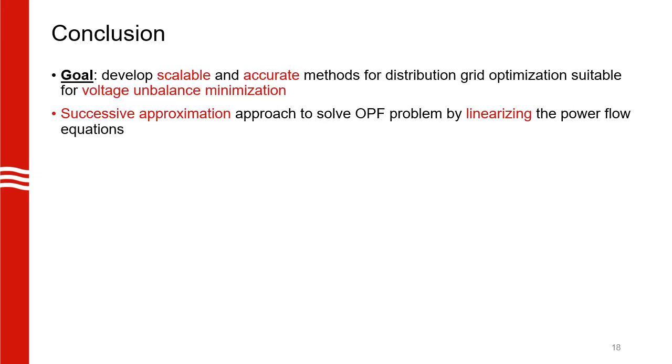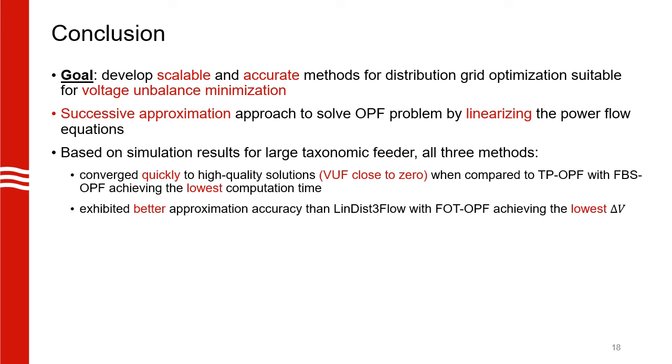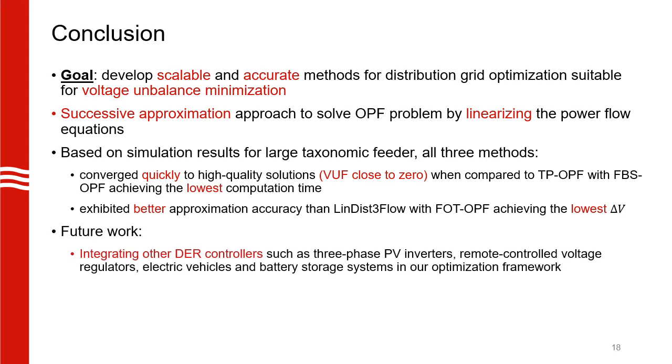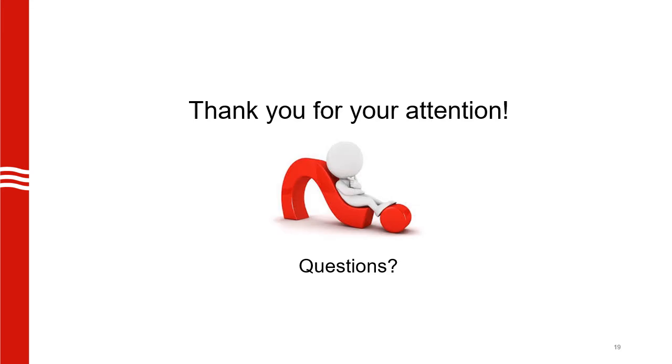Finally, to conclude, the main goal of our work was to develop scalable linear approximations for optimization of distribution grids that we can accurately use to analyze voltage unbalance. We used a successive approximation approach to converge to AC feasible solutions. Based on our simulation results, we saw that all three methods converge to very good solutions with considerable improvement in computation time. We also observed that the approximate solutions after the first iteration for all three methods had better accuracy than Lindisflow. In terms of future work, we plan to integrate more control variables into our OPF framework. This could either be electrical vehicles or battery storage systems. The plan here is to then investigate if the linear methods will still converge to good quality solutions. With that, I would like to thank everyone for your attention.